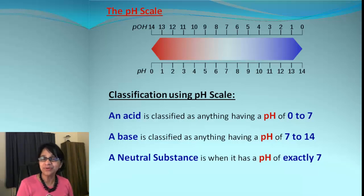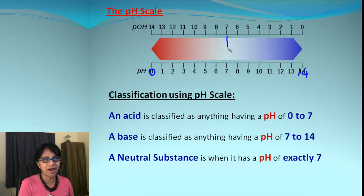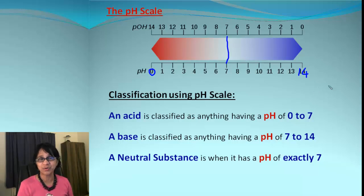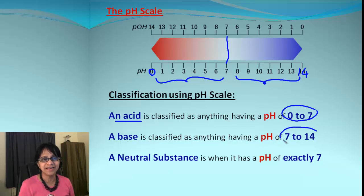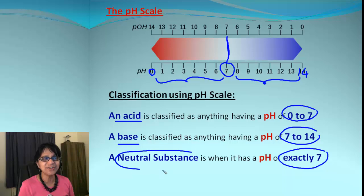There is also the pH scale, which begins with zero and ends at 14, with a midpoint of 7. We can find out if something is an acid, base, or neutral just based on pH values. If the pH value comes between 0 and 7, it is an acid. If pH comes between 7 and 14, it is a base. If it is exactly 7, you have a neutral substance.